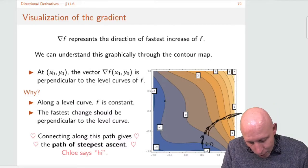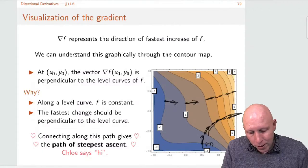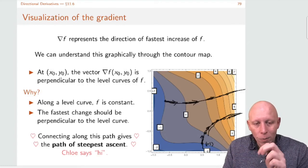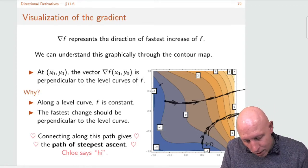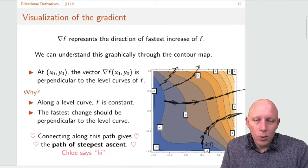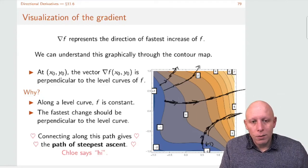Similarly, if we started here and went in this direction, we would follow the gradient — that would point us this direction, then here, here, and so on. So if we follow the gradient vector from every point to the next, we get paths of steepest ascent. That would be going up as fast as possible.